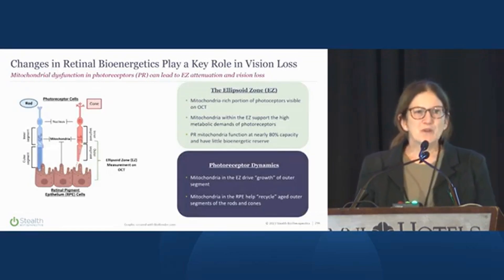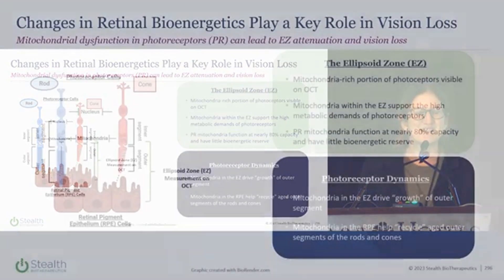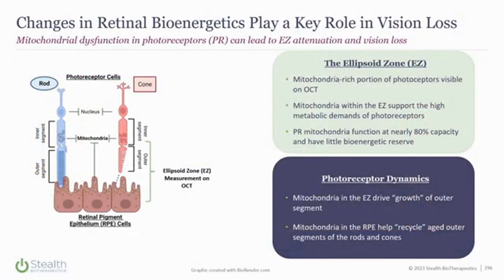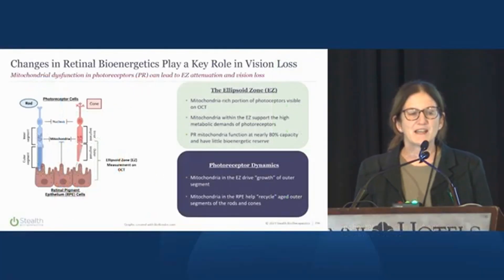Mitochondria are important in several different cell types in dry AMD. RPE cells, of course, are mitochondrial-rich, and there is an extremely rich mitochondrial layer of the photoreceptors called the ellipsoid zone. That is a Phase III approvable endpoint per FDA guidance.